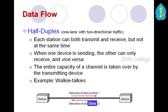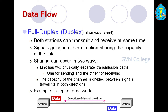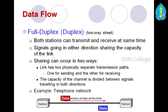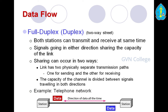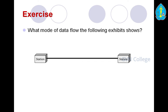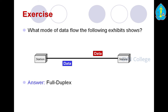The next method is full-duplex — a two-way street. Both stations can transmit and receive at the same time. At the same time, both station 1 and station 2 can send data — one is sending while the other is receiving, and simultaneously the other station is also sending and receiving. Signals travel in either direction sharing the capacity of the link. The link has two physically separate transmission paths — one for sending and one for receiving. The capacity of the channel is divided between signals traveling in both directions. An example is the telephone network.